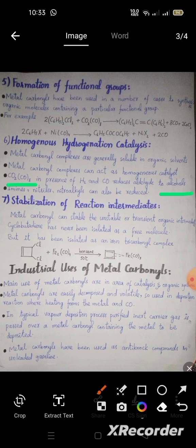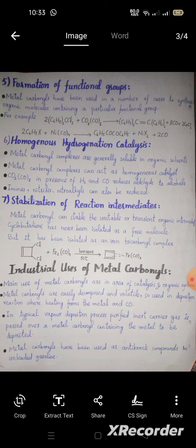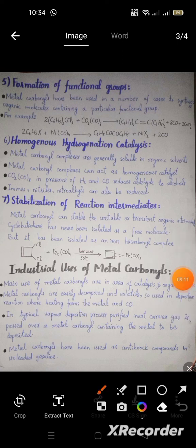Stabilization of reaction intermediates: metal carbonyls can stabilize unstable or transient organic intermediates. Cyclobutadienes have never been isolated as free molecules, but cyclobutadiene has been isolated as an iron tricarbonyl complex, Fe(CO)₃, demonstrating how metal carbonyls stabilize otherwise inaccessible intermediates.